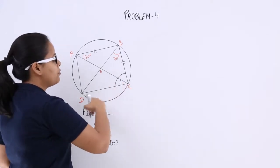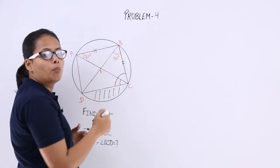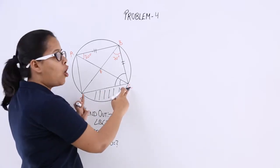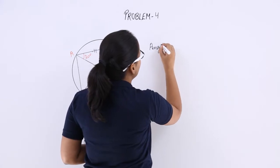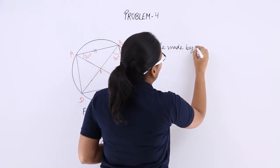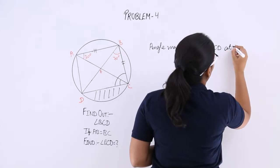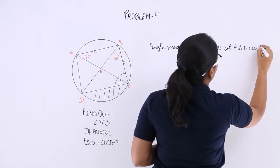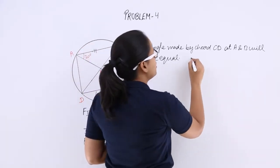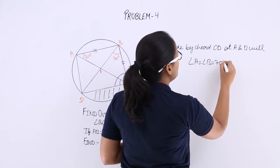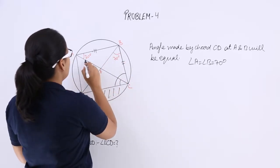You know that CD is a chord. For this chord, this is the minor segment and above is the major segment, where A and B both lie in the same segment. So the angle made by this chord at B will be equal to the angle made by this chord at A. The angle made by chord CD at A and B will be equal — we have discussed this theorem already. So angle DBA is equal to angle DBC, which is 70 degrees. This angle is 70 degrees and this angle here is also 70 degrees.